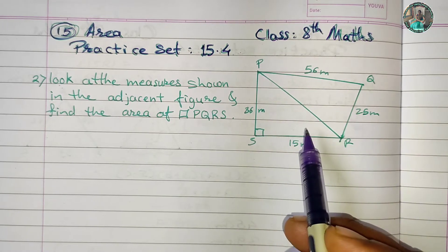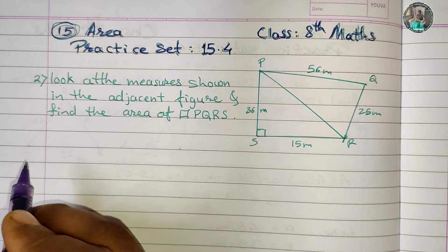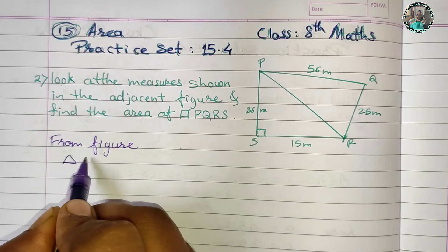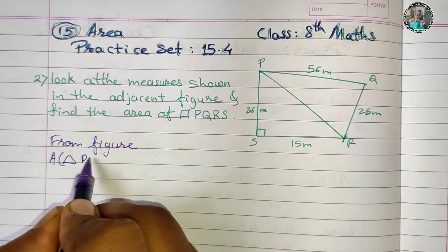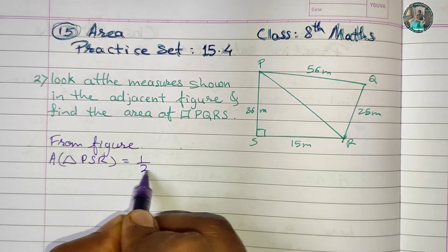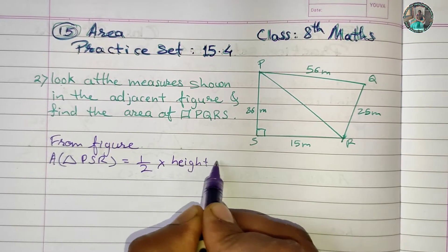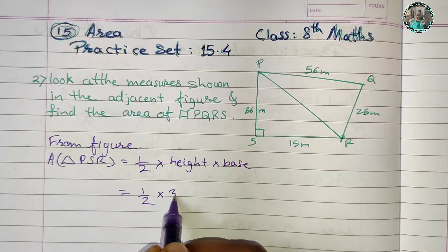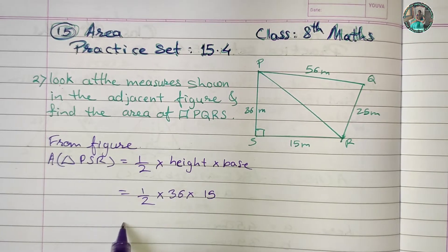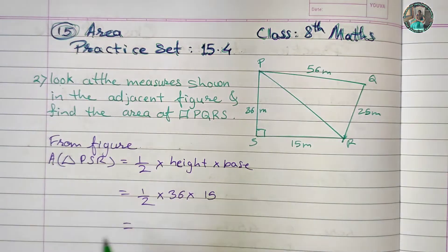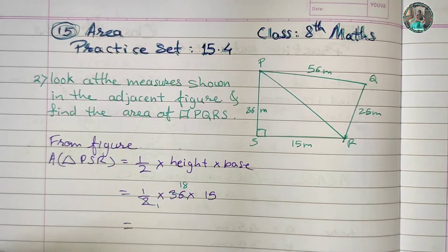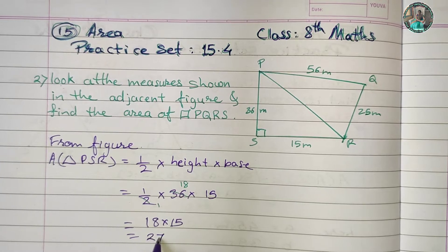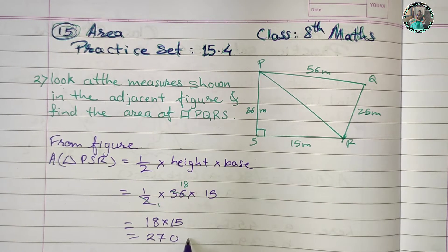Starting from the figure: Area of triangle PSR equals one-half into height into base — one-half into height 36 and base 15. Dividing 2 into 36 gives 18. So 18 into 15 equals 270. The area of triangle PSR is 270 square meters.